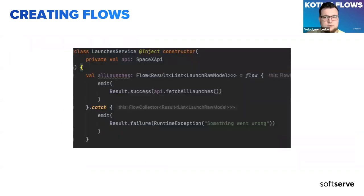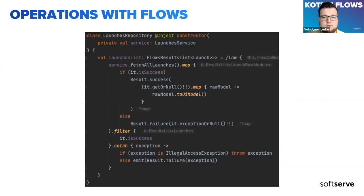Let's look at an example of how we can create a flow manually. We have the flow keyword, and it takes a coroutine block as a builder parameter. In this block we can make different operations with the flow — for example, emit some values or catch errors from the API. Flow also gives us a lot of functions to modify the stream: we can map values, filter values, transform whole flows, catch exceptions, or get the first or last values.